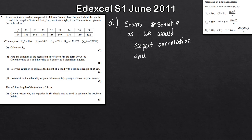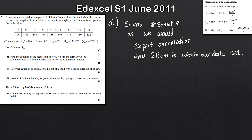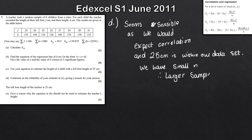The other thing to consider is whether the value we used — 25 centimetres — is within our data set. Looking at the data, our largest value for f is 27, so 25 does fall within the data set, which is a positive point. The only criticism is that we have quite a small sample size of only eight children. A larger sample size would give a better estimate.